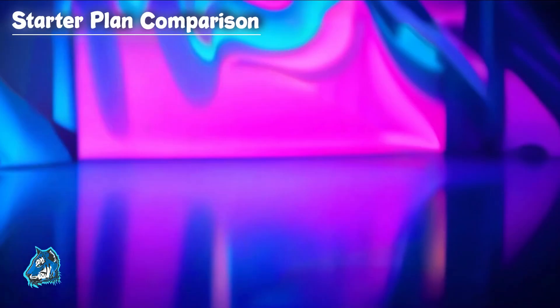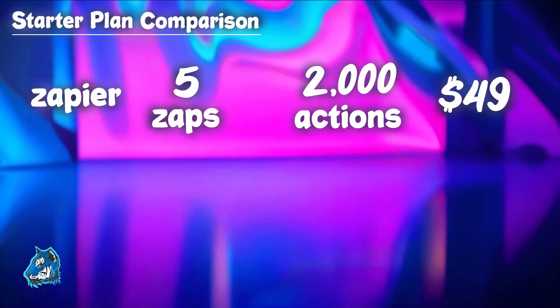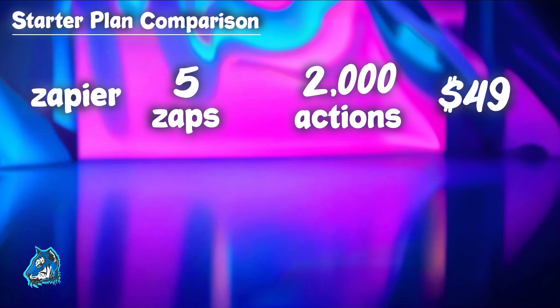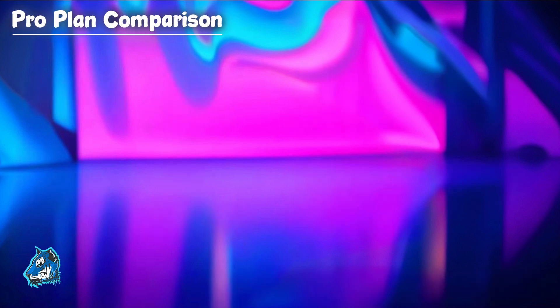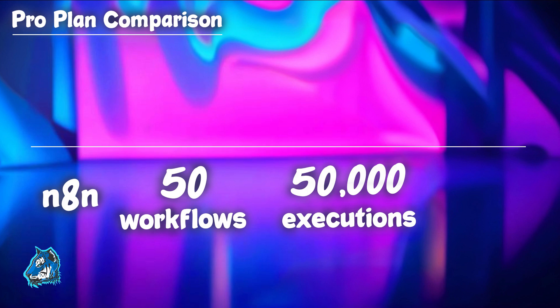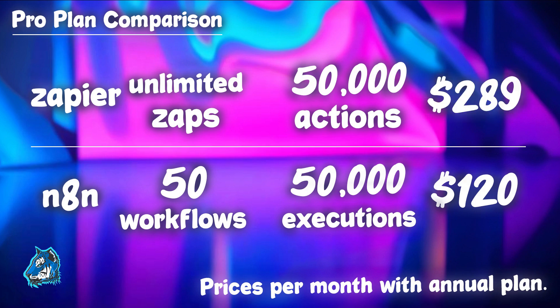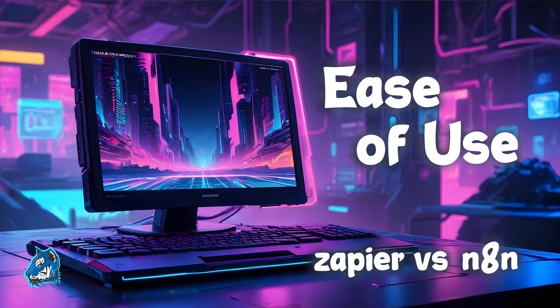When we compare pricing, we think n8n comes out on top. For example, if you have five Zaps in Zapier running 2,000 actions per month, that would cost you $49/month — more than double the cost of n8n's starter plan. n8n's pro plan offers 50 workflows and 50,000 executions for $120/month, while Zapier's equivalent plan with 50,000 tasks would cost a whopping $289/month. In the cost category, n8n definitely wins.